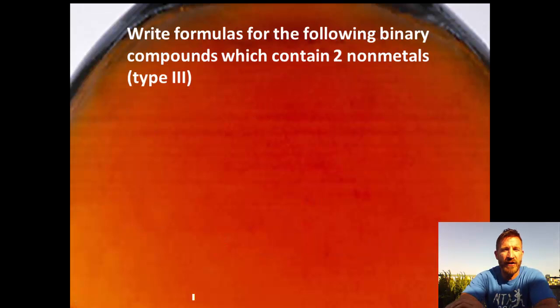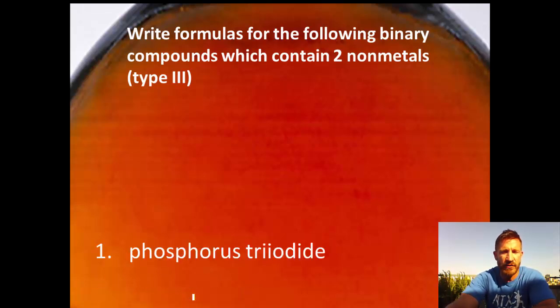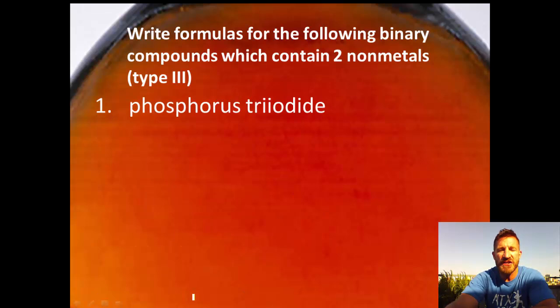Now we're going to write formulas for the following binary compounds which contain two nonmetals. What you can do is stop the video at any second if you want to try and write these down before I say them. First one, phosphorus triiodide: P for phosphorus, I for iodine, and simply a three after the iodine - PI3.